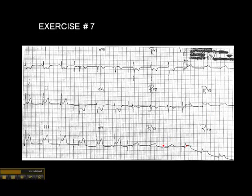The gold standard, if you have an inferior wall MI, is to do right-sided precordial leads. That's the expectation of emergency room staff and pre-hospital staff, barring a short transport and an unstable patient where it's just not practical to do right-sided precordial leads.